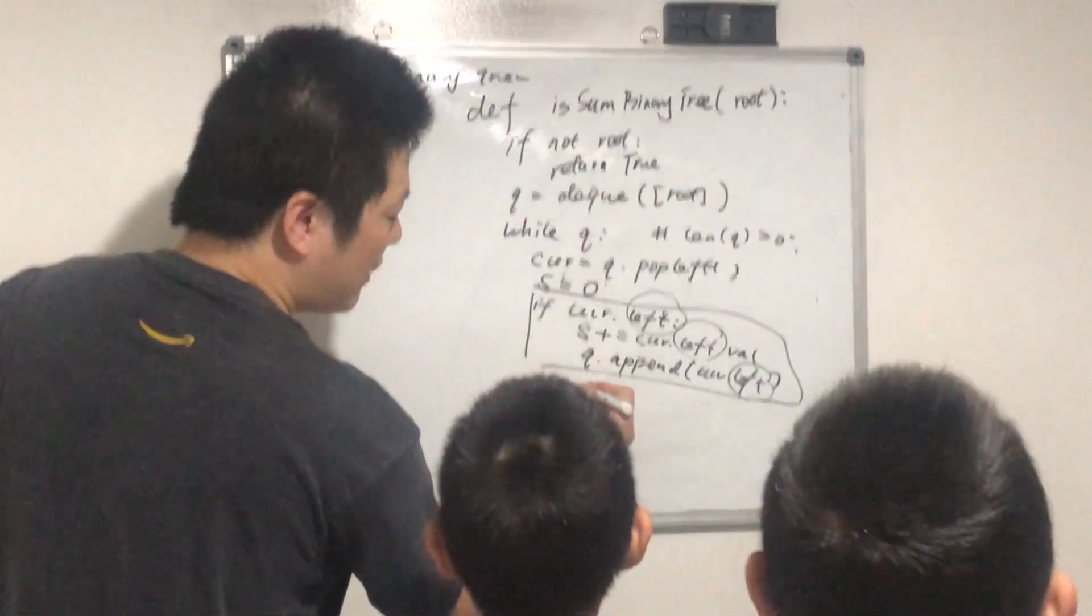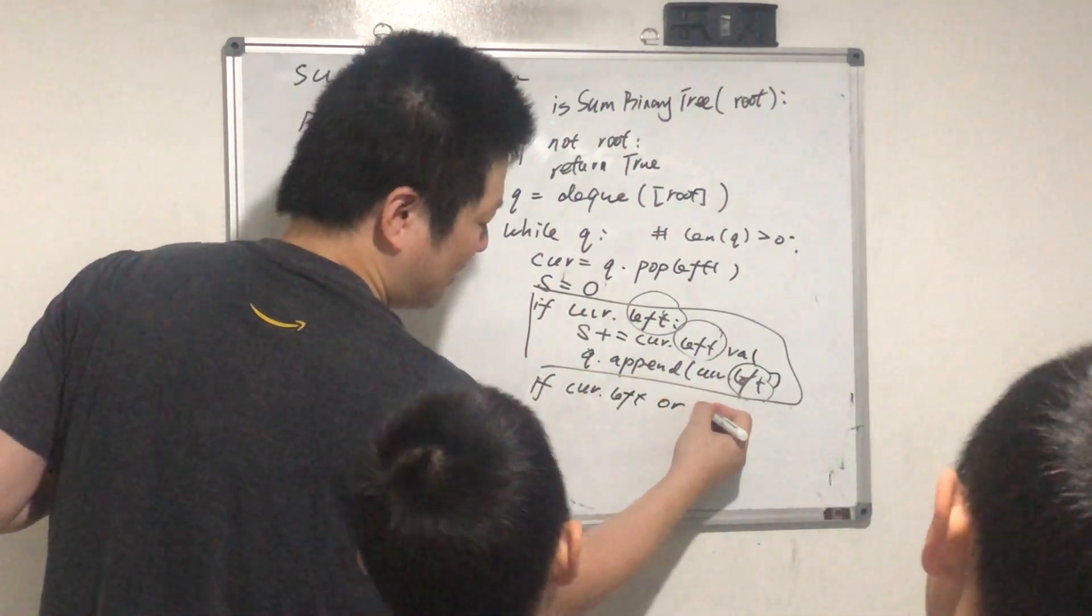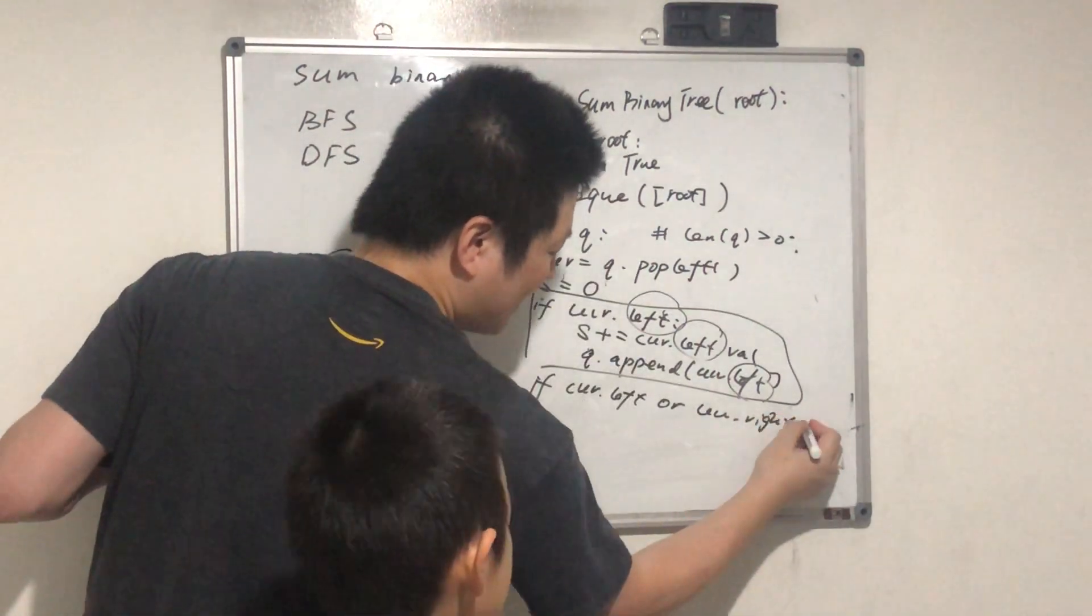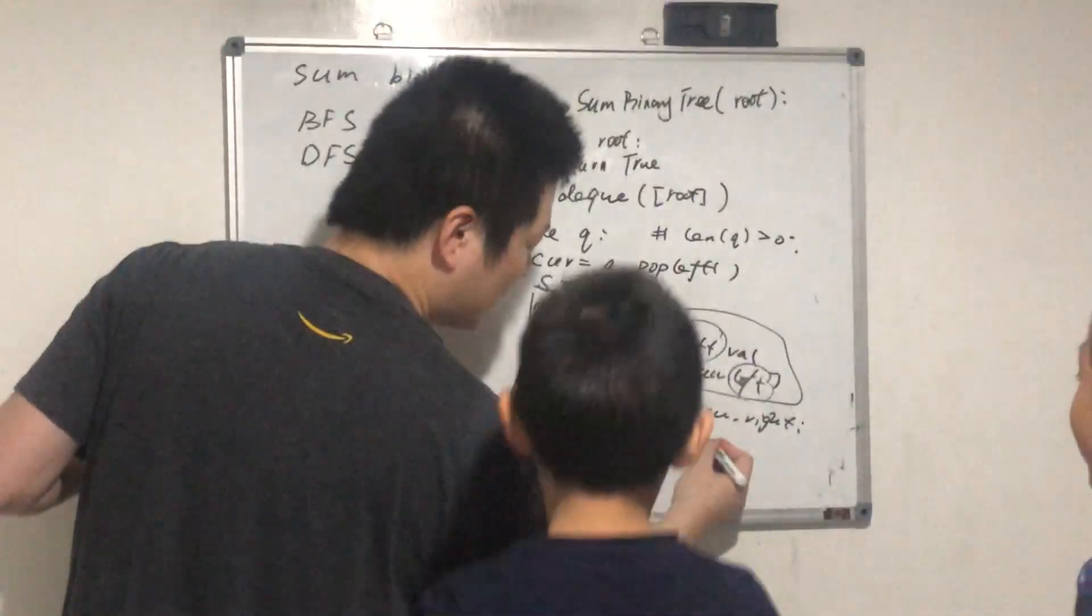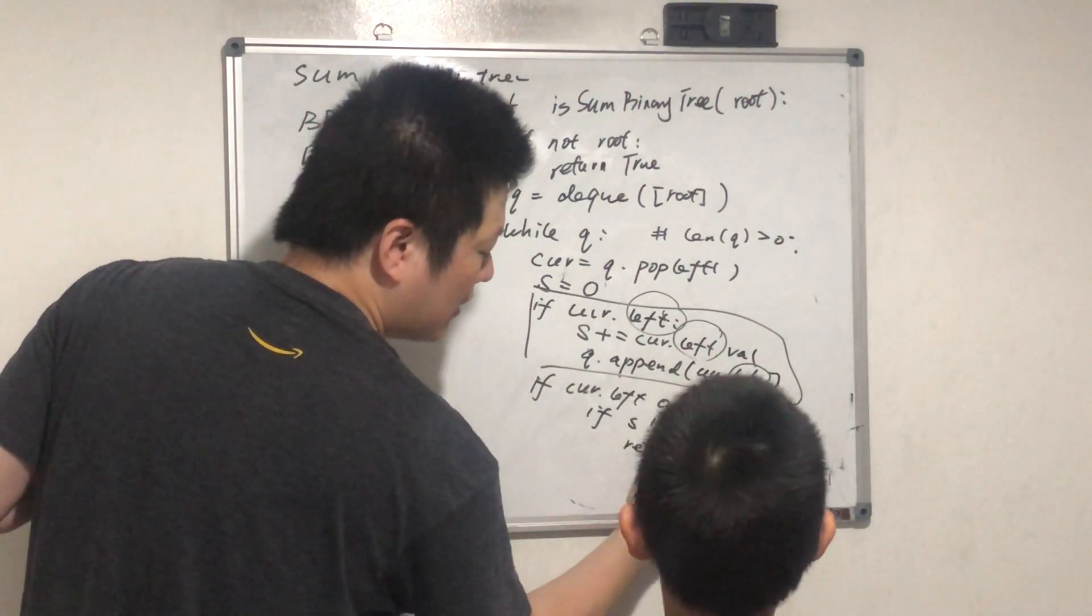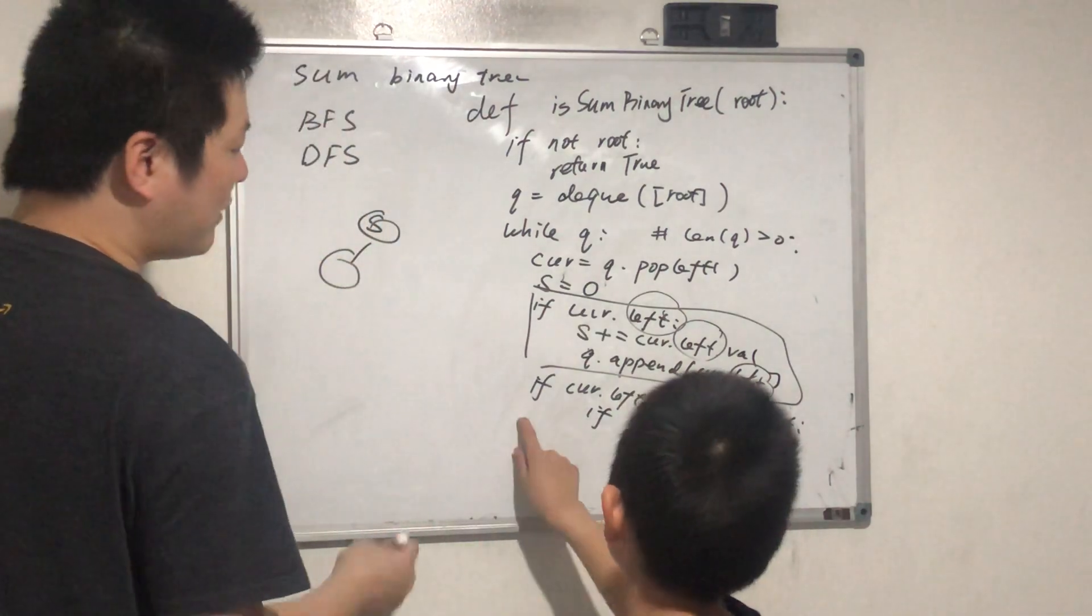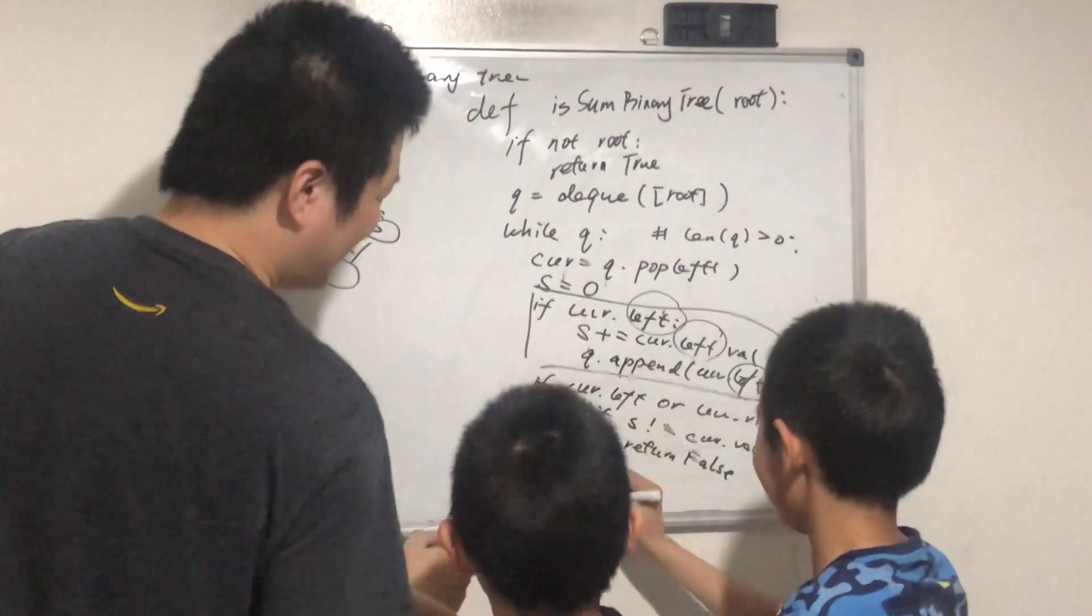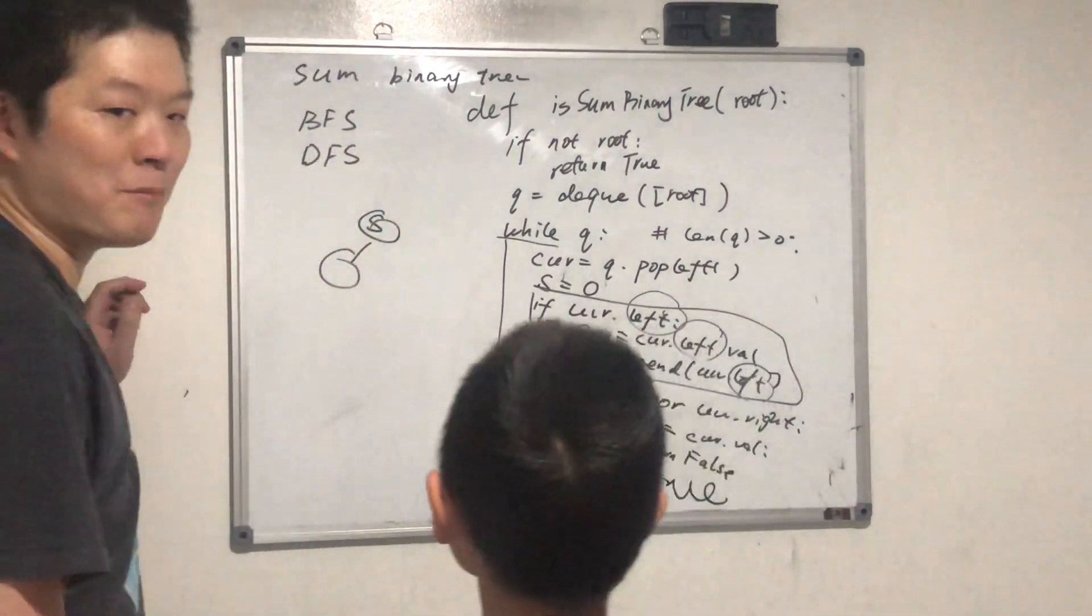It means it's not a leaf node, right? And then if s not equal to current.val, then return False. Return True here, after the while loop. Okay, what's the time complexity? O(n).